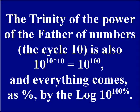Finally, we have a perfect dimension, and here I show it. The trinity of the power of the father of old numbers: the cycle 10, which is also 10 rise to 10 rise to 10, and everything comes out as a percentage by the logarithm in base 10 rise to 10 to 100 in percentage.